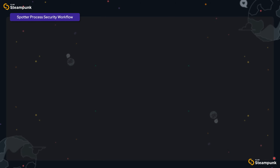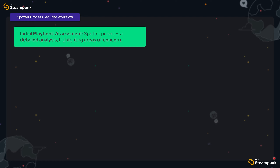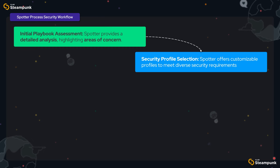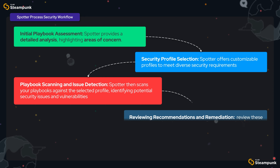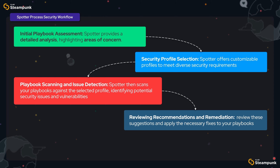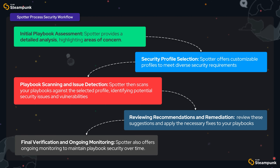When you use Spotter, you get a complete profile to secure your automation workflow. The first step is to assess your Playbook for any existing security issues — Spotter provides a detailed analysis highlighting areas of concern. Next, you select a security profile that aligns with your organizational policies. Spotter offers customizable profiles to meet diverse security requirements, then scans your Playbooks against the selected profile, identifying potential security issues and vulnerabilities. For each identified issue, Spotter provides actionable recommendations, and you can review these suggestions and apply the necessary fixes. After remediation, you can perform a final verification to ensure all issues are resolved. Spotter also offers ongoing monitoring to maintain Playbook security over time.